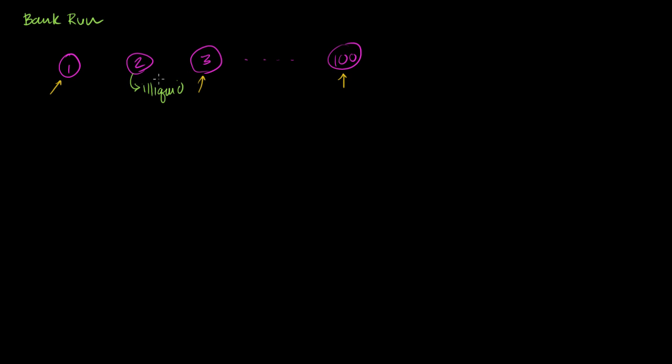And by definition, in a fractional reserve banking system, these guys only have 10% of their deposits as reserves. So if more than 10% of the people ask for their money, they're all going to be illiquid, and then you're going to have just an all out panic. You're going to have an all out panic of the financial system.